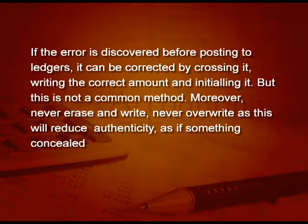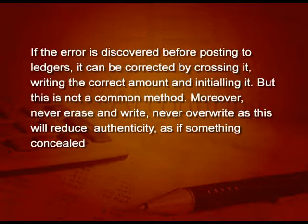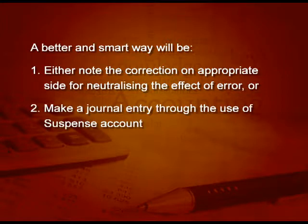Now, if the errors are discovered before posting to the ledgers, it can be corrected by crossing it out, writing the correct amount, and initialling it by the accountant. But this is not a common method because the books will look bad. Moreover, never erase and write and never overwrite, as this will reduce the authenticity of the accounts. A better and smart way will be either to note the correction on the appropriate side for neutralizing the effect of error, or you can make a journal entry through the use of suspense account.